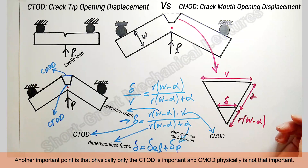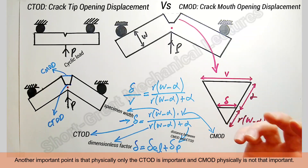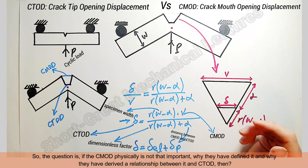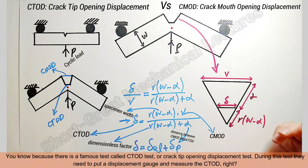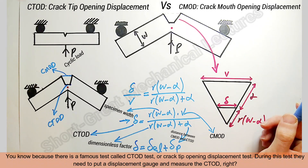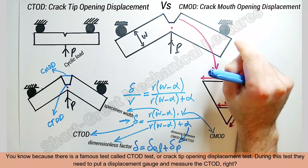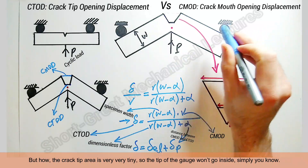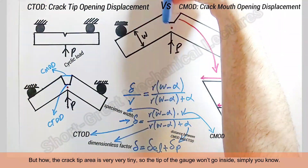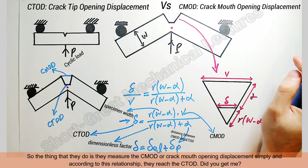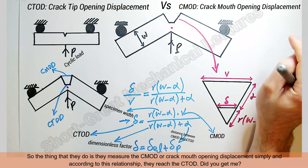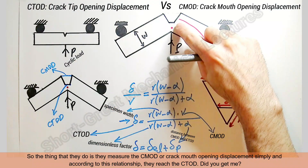Physically, only CT-OD is important and CM-OD is not that important physically. So why have they defined CM-OD and derived a relationship between it and CT-OD? Because there is a famous test called the CTOD test — crack tip opening displacement test. During this test, they need to place a displacement gauge and measure the CT-OD. But the crack tip area is very tiny, so the tip of the gauge won't go inside simply. So what they do is measure the CM-OD and then use this relationship to reach the CT-OD.